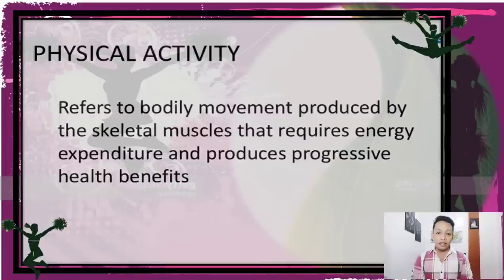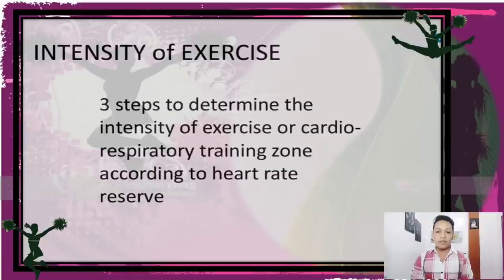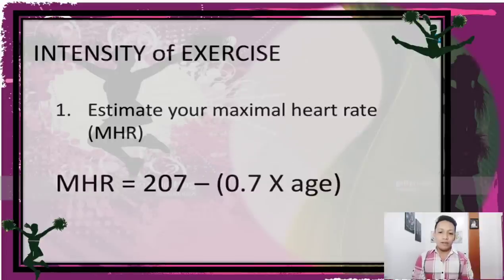Physical activity refers to bodily movement produced by skeletal muscles that requires energy expenditure and produces progressive health benefits. Exercise is a type of physical activity that requires planned, structured, and repetitive bodily movements to improve or maintain one or more components of physical fitness. For intensity of exercise, there are steps to determine the cardiorespiratory training zone according to heart rate reserve. Step one: estimate your maximal heart rate (MHR). MHR equals 207 minus (0.7 times your age, H).